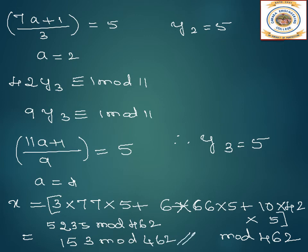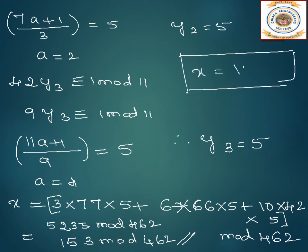So x equals 153. You substitute this in those three equations and you should get the remainders as mentioned there.